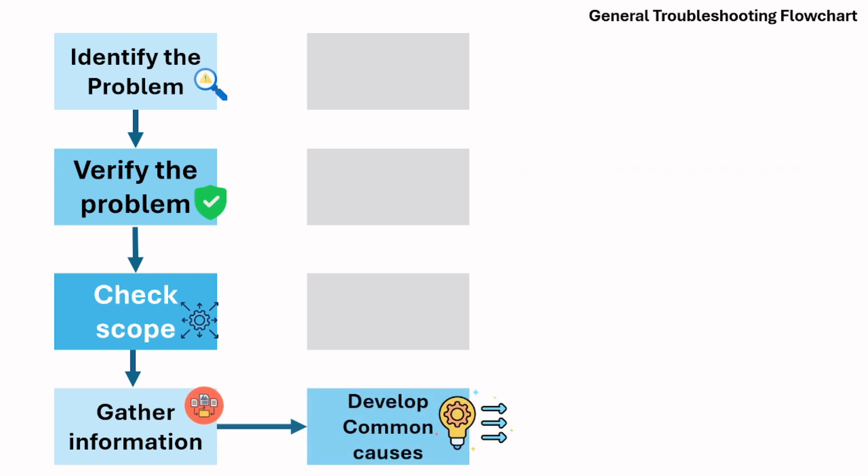The next step is to develop common causes. Based on all the information you gathered, list possible causes of the problem. It seems to be printing on Word but not on PDF files, so I'll list the possible causes: the PDF viewer might be outdated, or there might be security settings in Acrobat that prevent printing. Instead of randomly trying fixes, you are systematically testing logical causes.